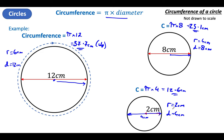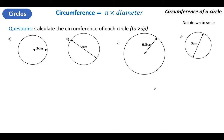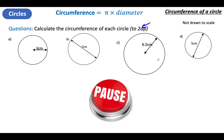My tip is to write down radius equals and diameter equals, work it out, then decide which one you need and times it by Pi. Let's change it up a little bit — let's do two decimal places. So press pause on the video, do all four of those, and then unpause when you're done.